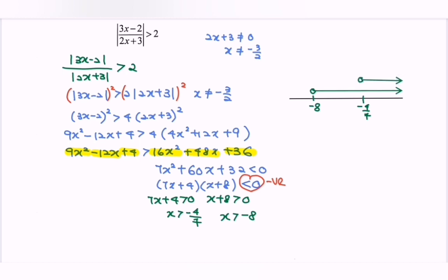So here we have negative, negative, and negative in the first region; then positive, negative, positive in the subsequent regions. Referring to the question, we need the negative sign, so the middle region is the answer. Kindly take note of the restriction, where negative 3 over 2 is located within that interval.